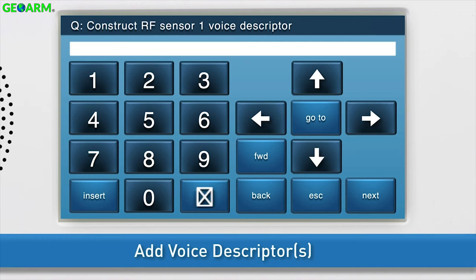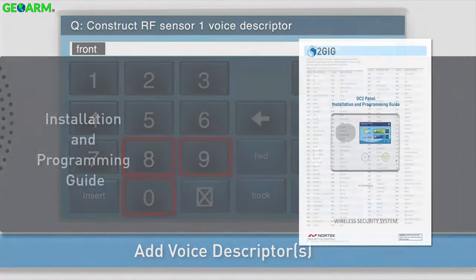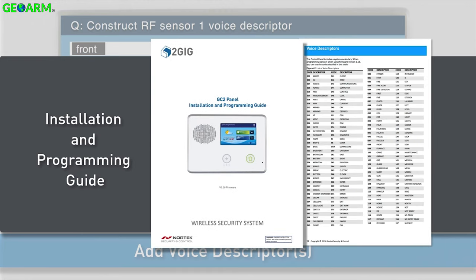Next, add the voice descriptors. Press Insert. The word abort will automatically appear in the answer box. Change the word by either using the right and left arrow buttons, or by typing the word's three-digit code using the keyboard. For a list of all voice descriptors and their associated codes, see the Installation and Programming Guide.